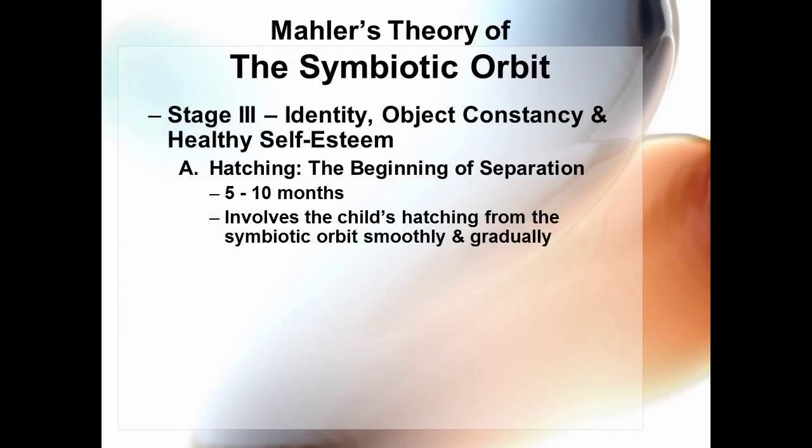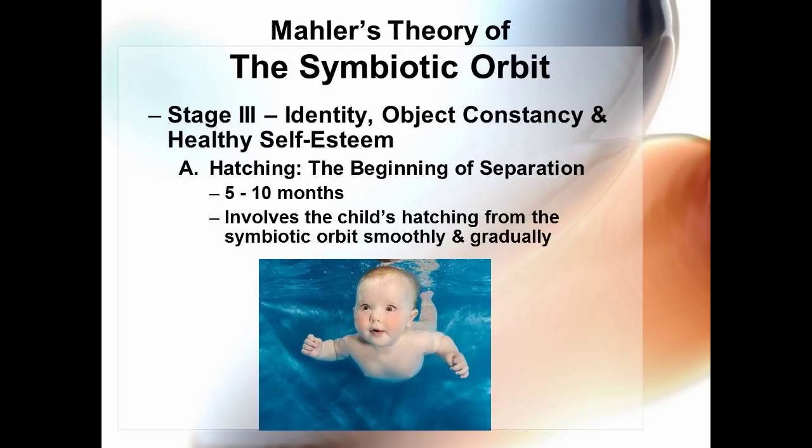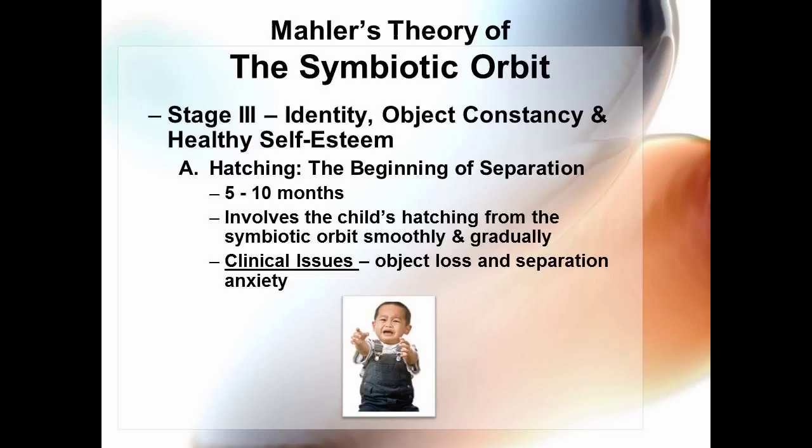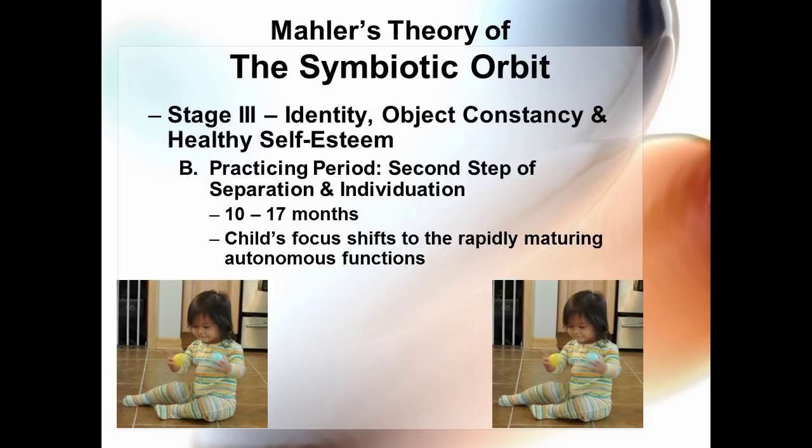Mahler noted clinical issues that could result if the child did not successfully complete the hatching stage. Issues included object loss and separation anxiety, and these problems, if untreated, could continue through adolescence and even adulthood. The second step of stage three is the practicing period, occurring between ages 10 and 17 months, in which the child begins to develop autonomous functions. Clinical issues at this step might include a grandiose self that could later lead to pathological narcissism.